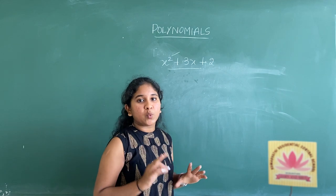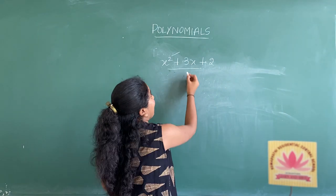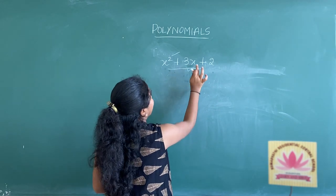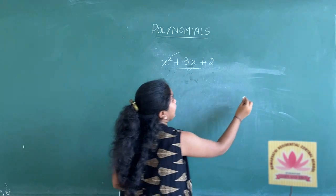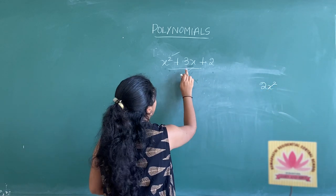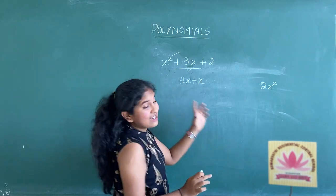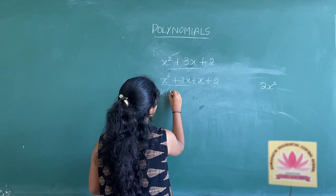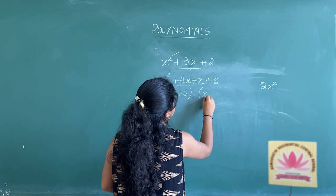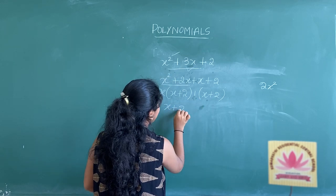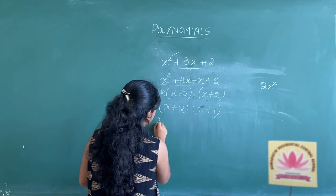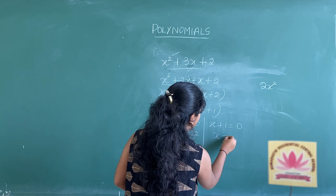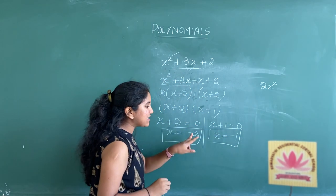You should factorize in such a way that when you add the two terms the value is 3x, and when you multiply the two numbers the value is 2. You can split 3x as 2x plus x: so x squared plus 2x plus x plus 2. Here x is common in the first two terms, giving x(x plus 2), and 1 is common in the last two, giving 1(x plus 2). So you get (x plus 2)(x plus 1). Therefore x equals minus 2 and x equals minus 1. The two zeros of this polynomial are minus 2 and minus 1.